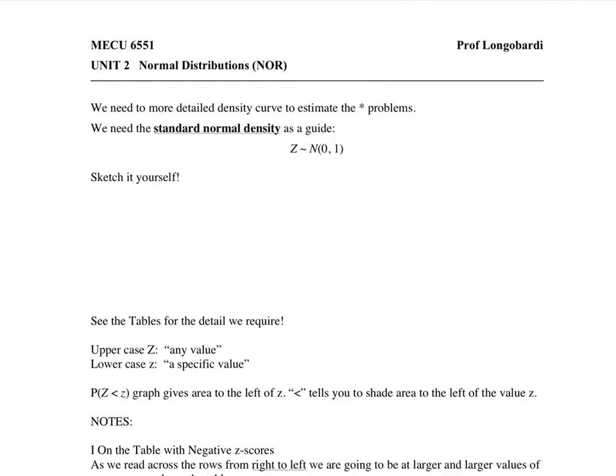So we're going to develop that systematic approach, and it involves using what's called a standard normal density. This is a special normal density curve. So this curve is so special, it has a special name. It's not going to be referred to as x.